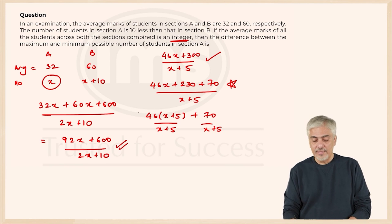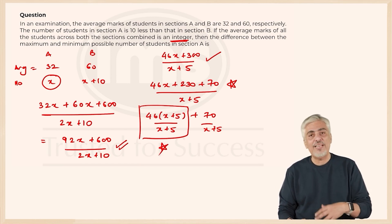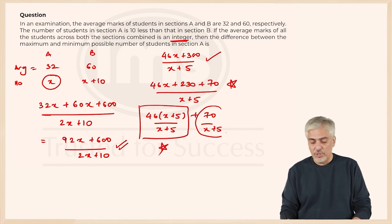Now understand one simple thing: this part will always be an integer whatever be the value of x. So now my problem is not over here. Whatever value I take for x, this part will always be integer because x plus 5 will cut. So the problem is going to come only from here.